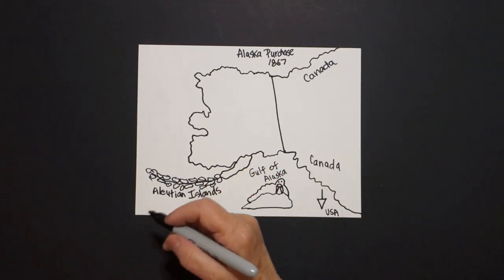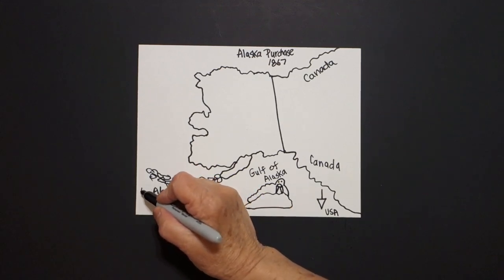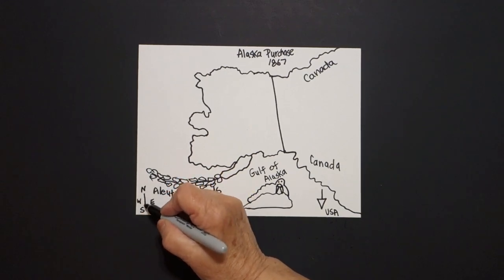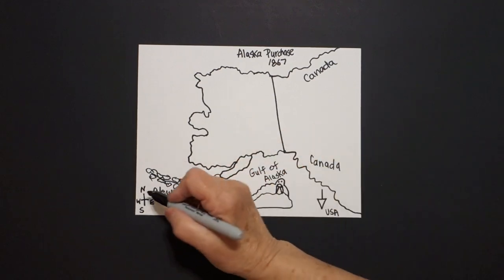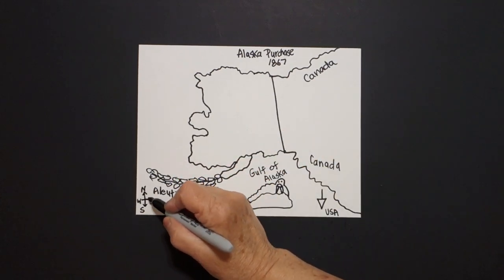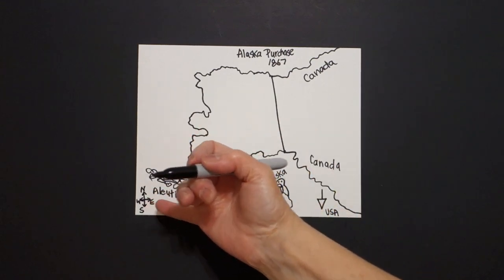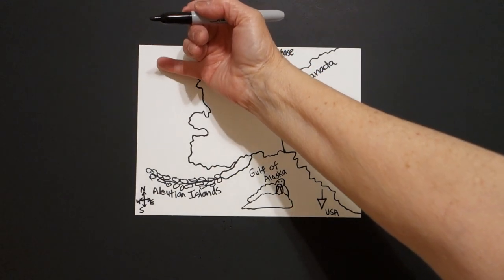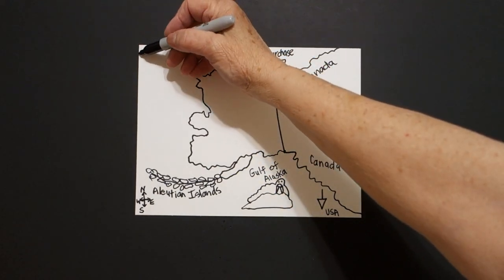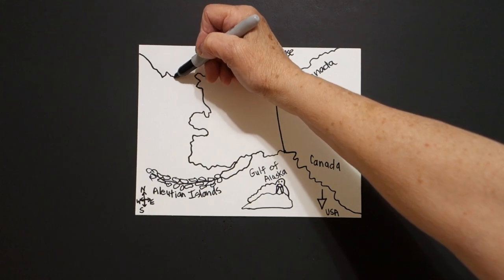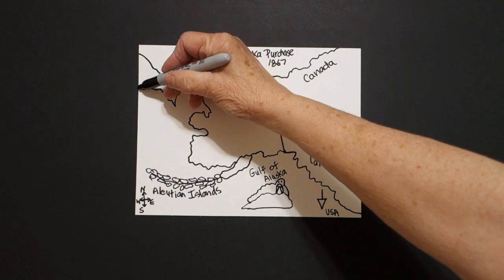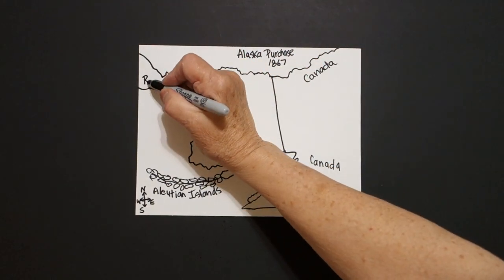On this side over here on the bottom left, I almost ran out of room. I'm going to put N, S, E, W. And then I'm going to draw my compass rose with little arrows so you know north, south, east, and west. Now I come up on the upper left and I draw a wavy line down, up, down, up, keep going off the page. This is Russia.